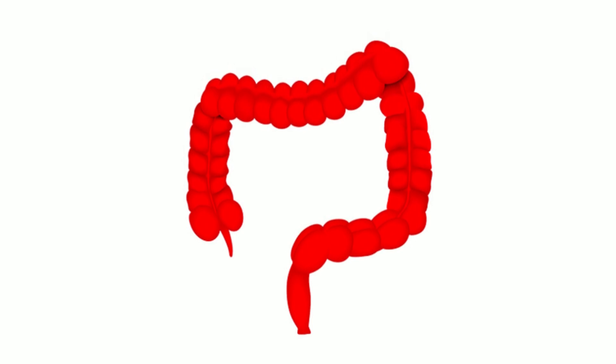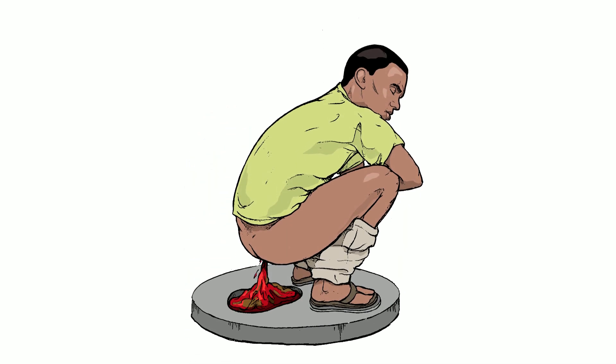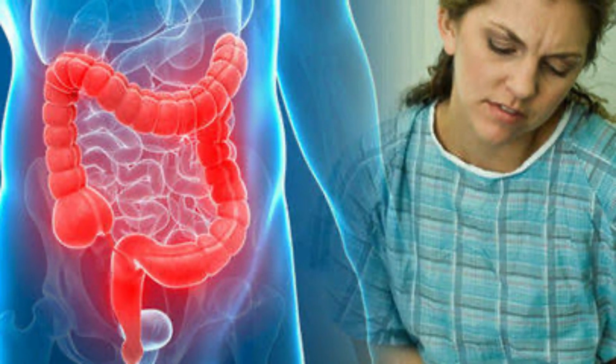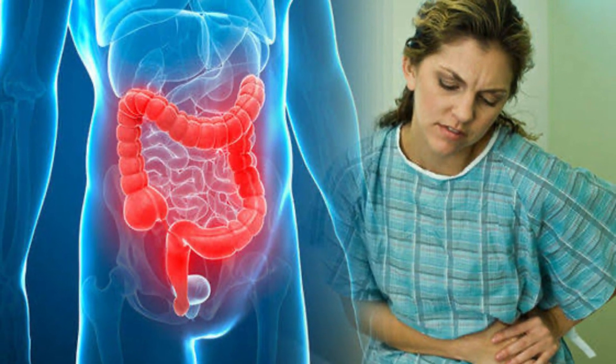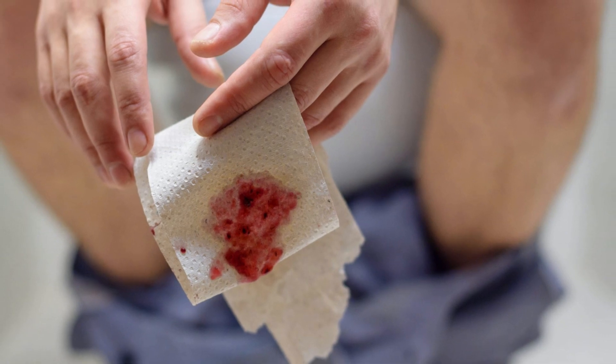Pan colitis may affect the entire colon, resulting in severe episodes of bloody diarrhea, discomfort, exhaustion, and significant weight loss. Bloody diarrhea is one of the primary symptoms of ulcerative colitis, and you may also have some pus in your stools.